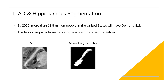Alzheimer's disease is irreversible and can cause severe memory and behavioral problems, affecting more people and families. Projections indicate that by 2050, more than 13.8 million people in the United States will have dementia. Studies showed that hippocampus volume is an essential quantitative indicator for Alzheimer's disease, so correct segmentation of this region is critical to tracking volumetric changes in the brain to diagnose the disease early.